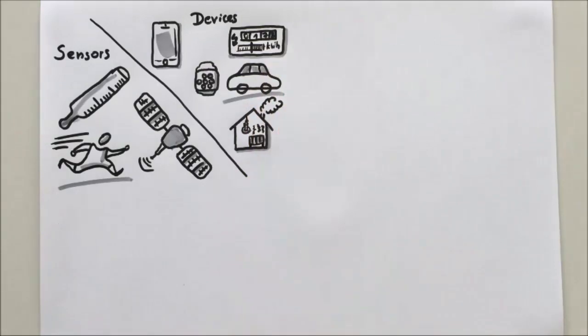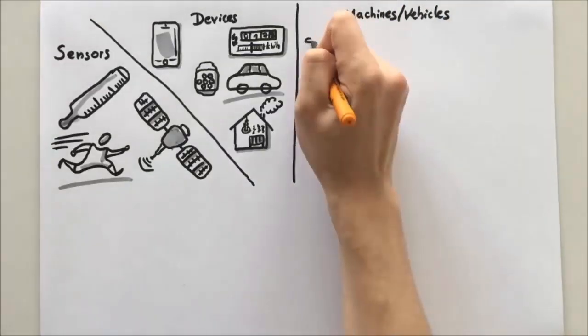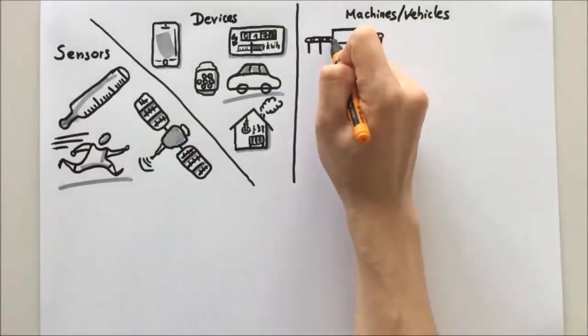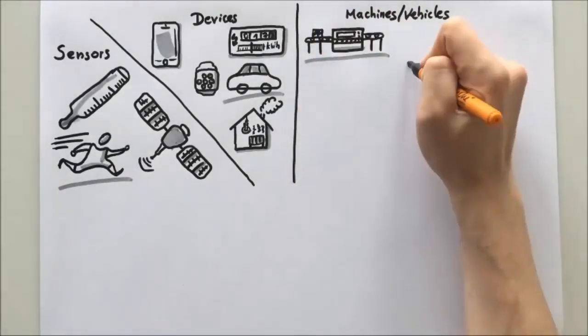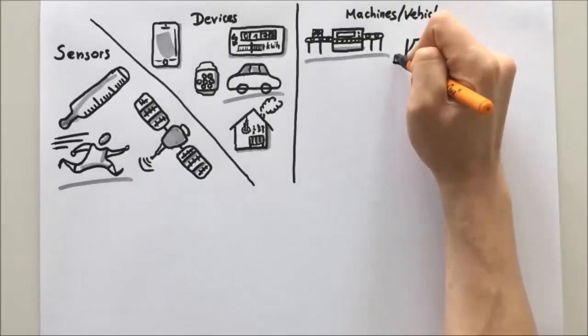In the business environment, we might see working machines, specific vehicles, or other things that already include sensors. Examples of these are machines in a production environment or vehicles such as a forklift truck or trucks that transport materials from A to B.